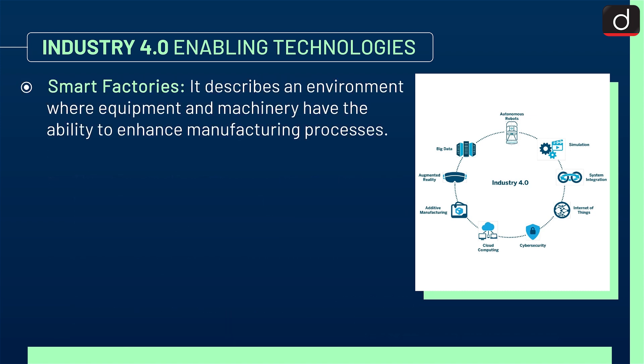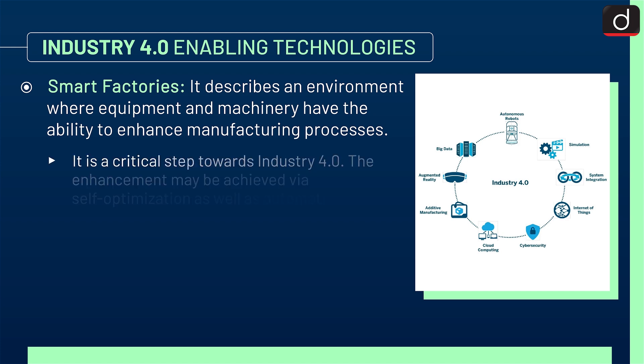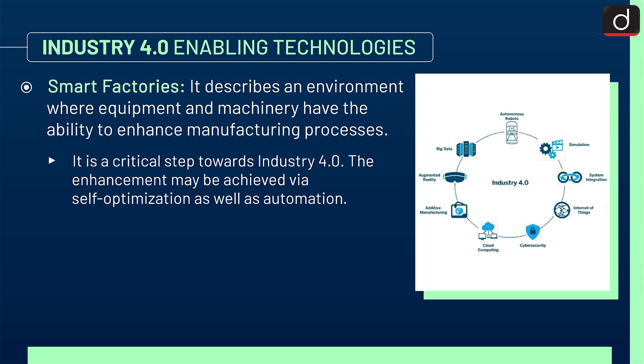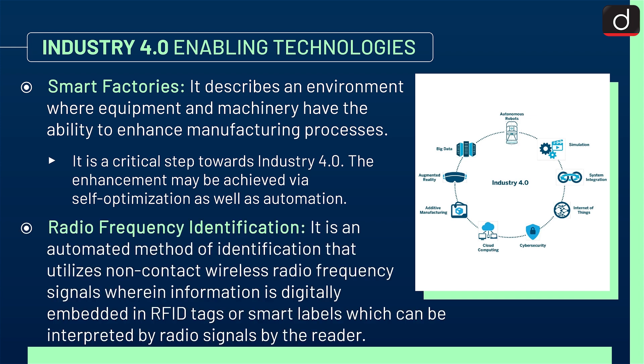Next is smart factories. It describes an environment where equipment and machinery have the ability to enhance manufacturing processes and services. It is a critical step towards Industry 4.0, and the enhancement may be achieved via self-optimization as well as automation. Next is radio frequency identification (RFID) — an automated method of identification that utilizes non-contact wireless radio frequency signals, wherein information is digitally embedded in RFID tags or smart labels, which can be interpreted by radio signals by the reader.